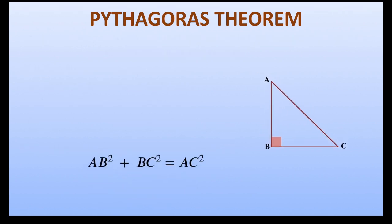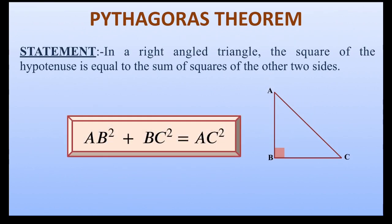Hence our required result is proved, that is, in a right-angled triangle, the square of the hypotenuse is equal to the sum of squares of the other two sides using the similarity concept of triangles. Thank you for learning.